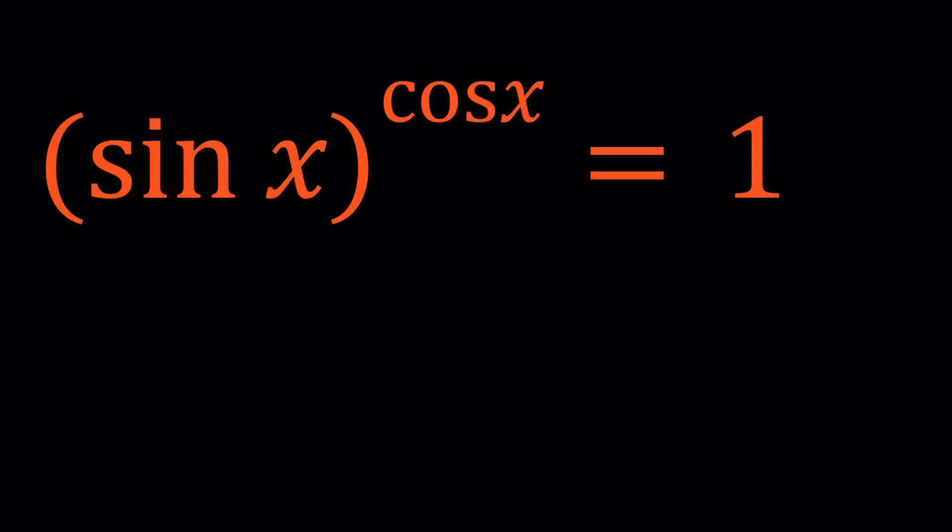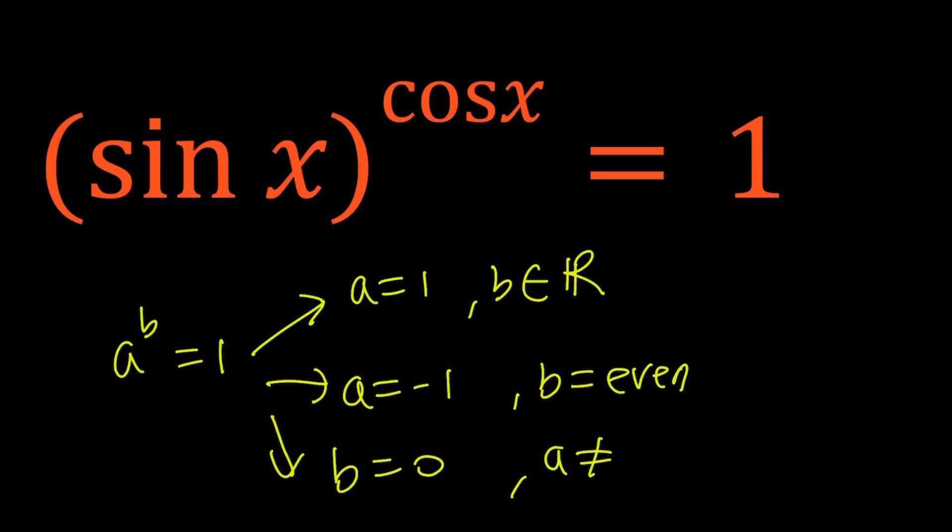So, whenever you have, in the real world, when you have something like a to the power b equals 1, we can easily think of three different options. Here's the options: a could be 1, and b could be a real number. Or a could be negative 1, and b could be an even integer. Or b could be 0, but a has to be different from 0, because you don't want to approach 0 to the power of 0.